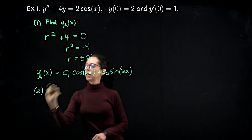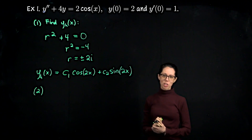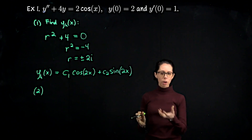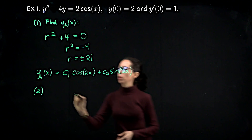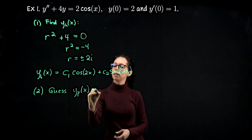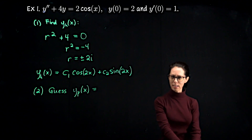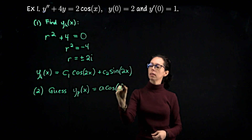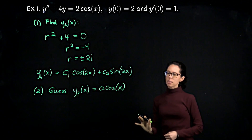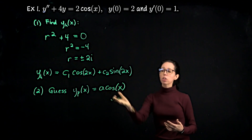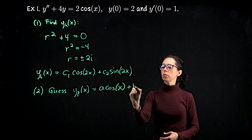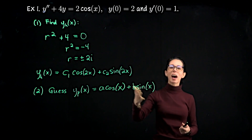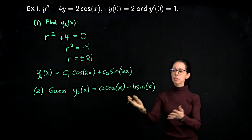The second step is to guess a good form for the particular solution, which is going to look like a generalized version of the right-hand side. Our right-hand side is 2 cosine of x. The cosine of x is key, so we're looking at this trigonometric right-hand side. I'm going to guess a cosine of x. But there's another function that when you start taking derivatives can look like cosine of x, and that's sine. So we actually have two terms: a cosine of x plus b sine of x. This is our best guess for the particular solution.